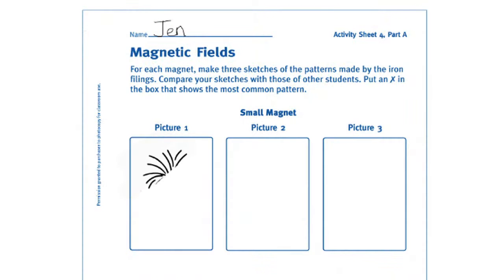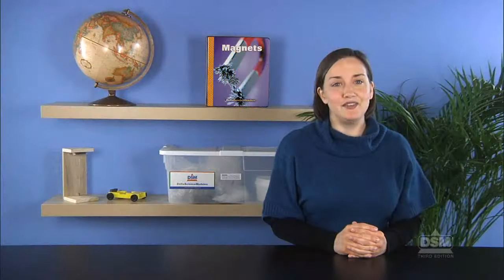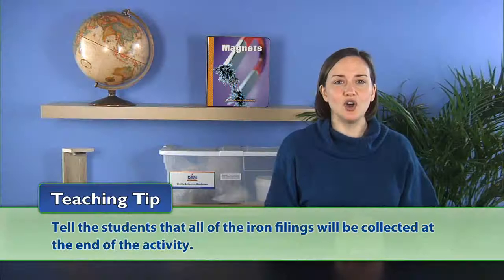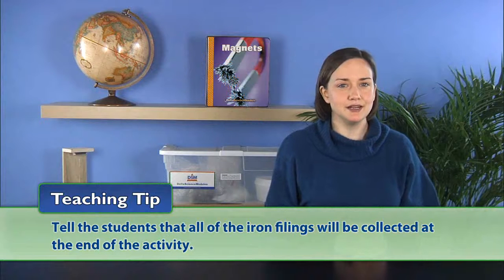Tell students to sketch the pattern made by the iron filings and the small magnet on Activity Sheet 4, Part A. Then, ask the students to repeat the process two more times and to sketch what they see each time. Tell the students that all of the iron filings will be collected at the end of the activity.